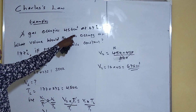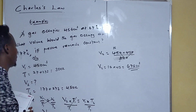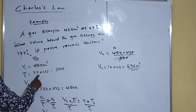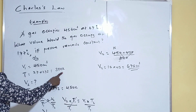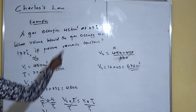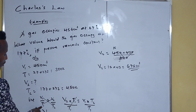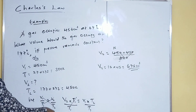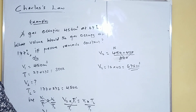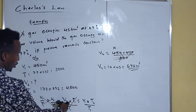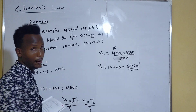To summarize Example 1: a gas occupies 450 cm³ at 27°C. What volume would it occupy at 177°C if pressure remains constant? V1 = 450, T1 = 27 + 273 = 300 K, V2 = unknown, T2 = 177 + 273 = 450 K. Using V1/T1 = V2/T2, cross-multiply to get V2 = (V1 × T2) / T1 = (450 × 450) / 300 = 675 cm³.